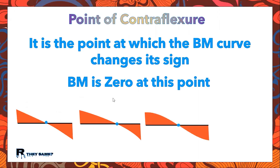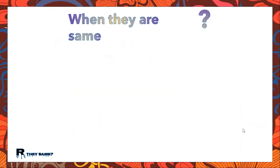Even in this case, where the left part of the bending moment diagram is positive and gradually decreases to negative, this point is called a point of contraflexure. So when are the two points the same?